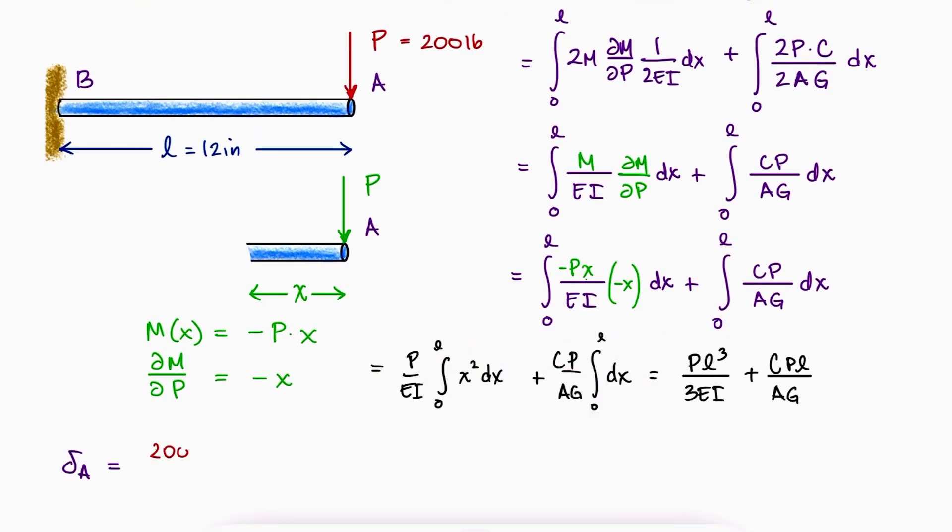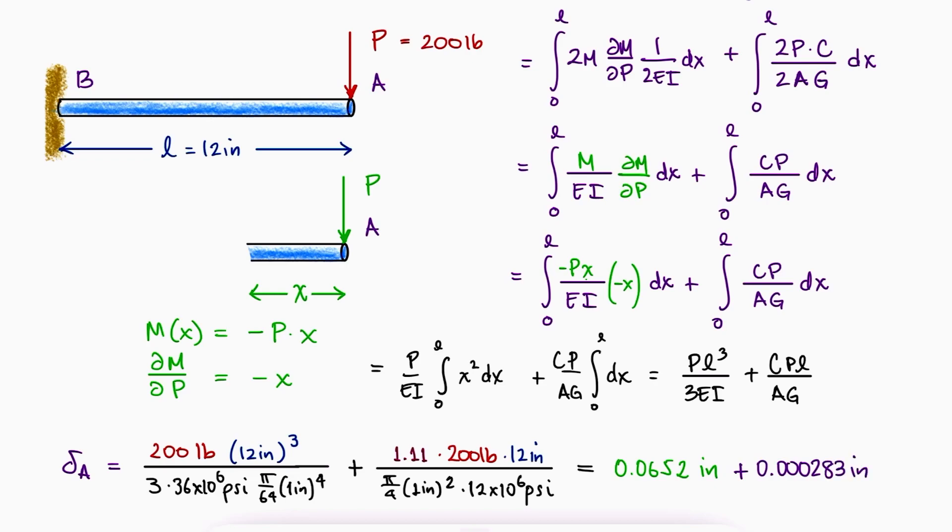...we can substitute the given values to see that the deflection of A is equal to 65.2 thousandths of an inch because of pure bending, and less than 3 ten thousandths of an inch because of transverse shear. This shows us that the transverse shear accounts for approximately 0.4% of the total deflection, and is therefore, like I mentioned before, almost always negligible for long structures.